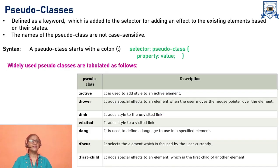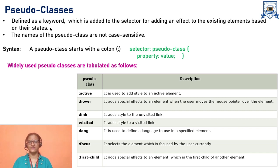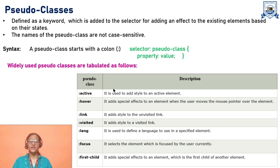This is the cascading order. Now we talk about pseudo classes. A pseudo class is a keyword added to a selector for adding an effect to existing elements based on their state. The names of pseudo classes are not case sensitive. The syntax starts with a colon sign: first we take the selector, then a colon sign followed by the pseudo class, then the property and value.